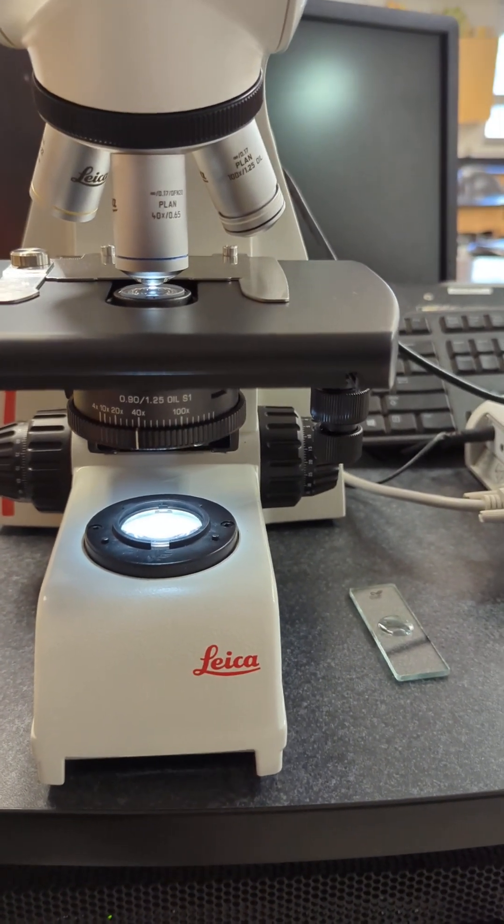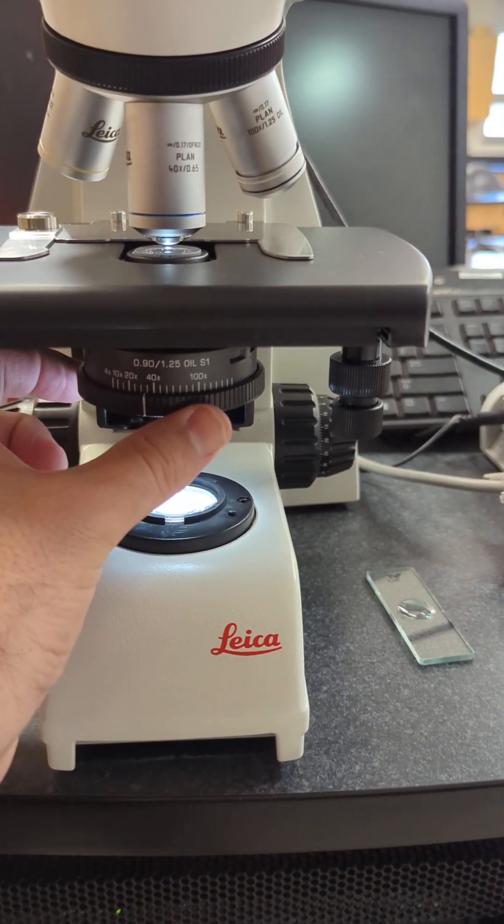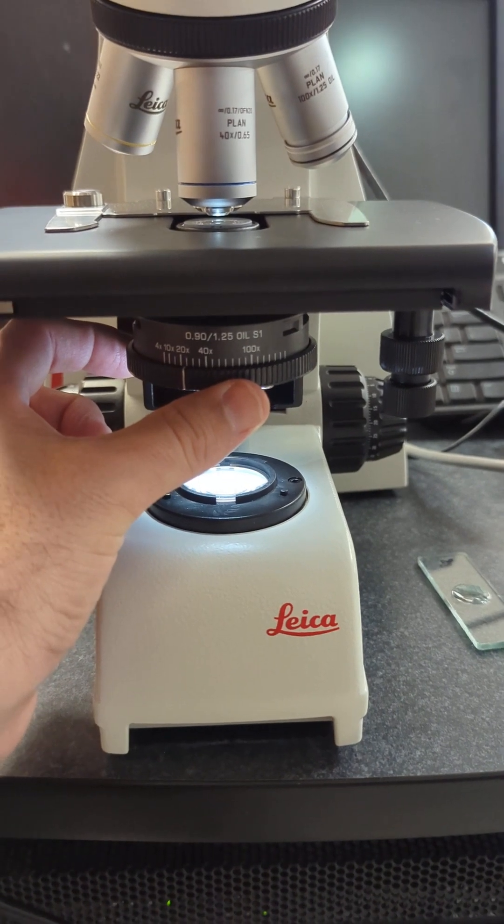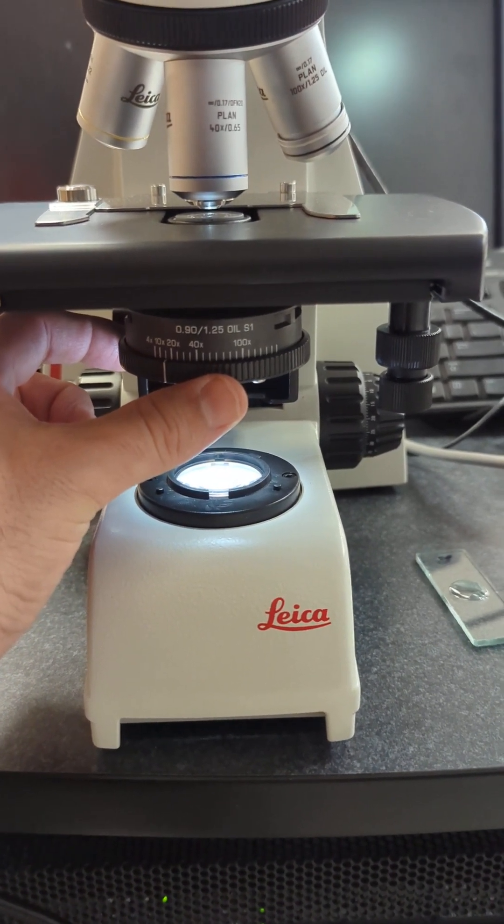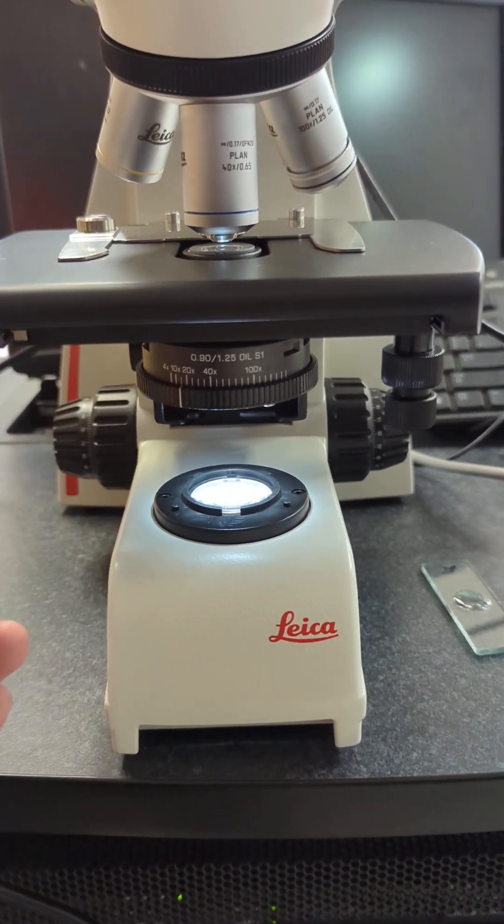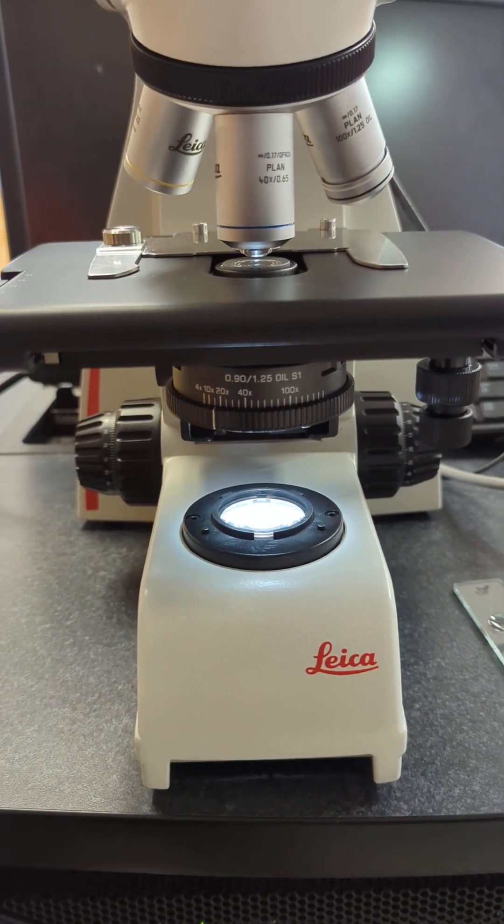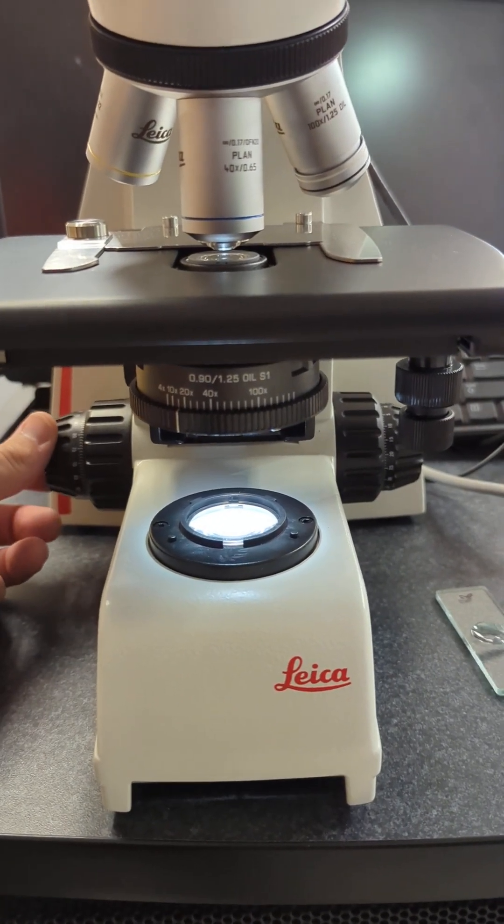Because of that, sometimes when you want to see more depth, you can actually dial the condenser down to 20x or even lower, wherever it starts to look good. You'll start seeing more depth pick up in the sample without having to focus as much.